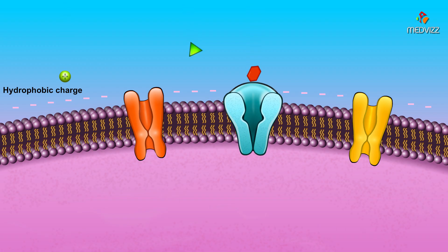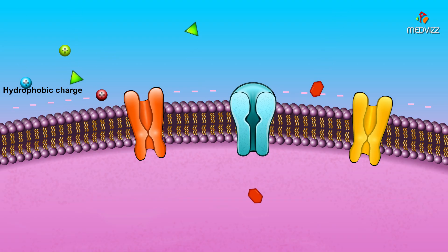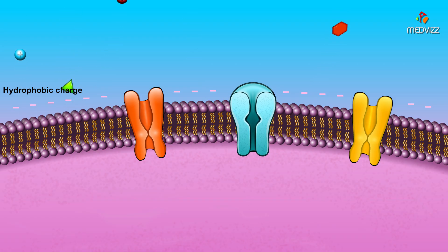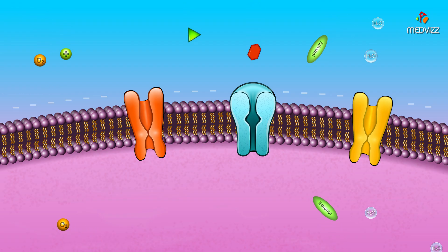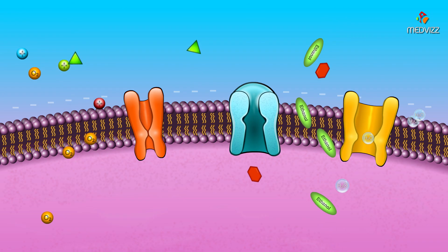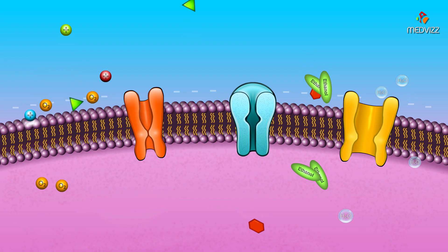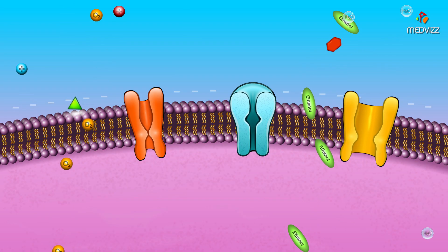With their hydrophobic cores and charged surfaces, cell membranes are very efficient at blocking passage of many molecules. Some molecules, such as water, dissolved oxygen, and simple alcohols, are able to pass through cell membranes freely by passive diffusion.